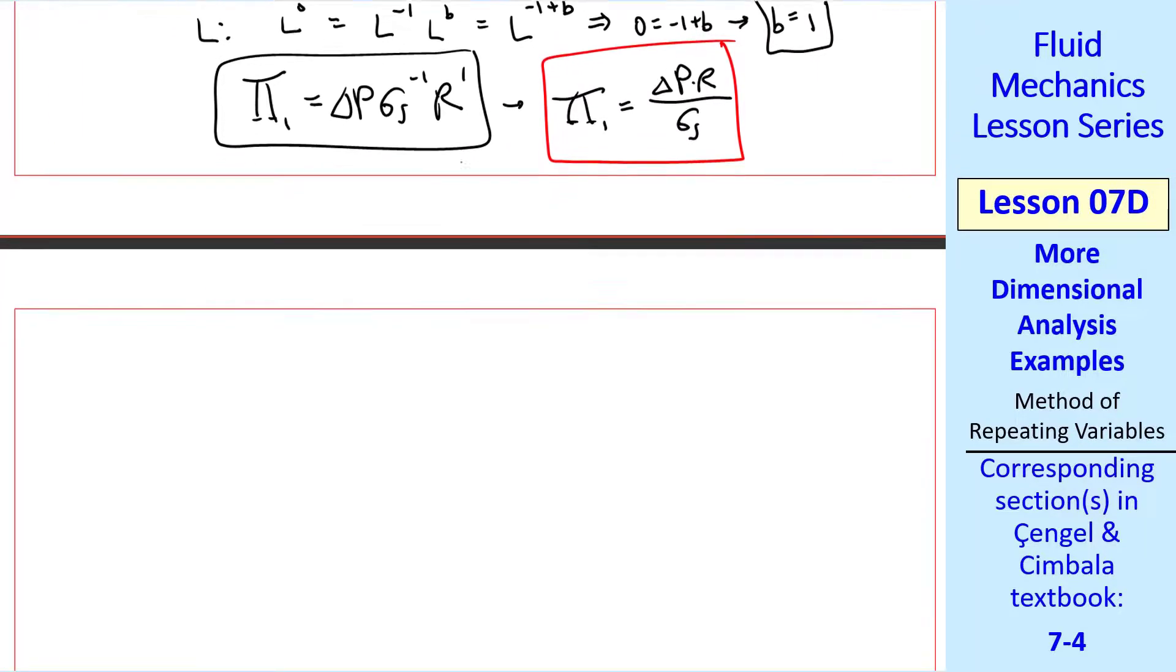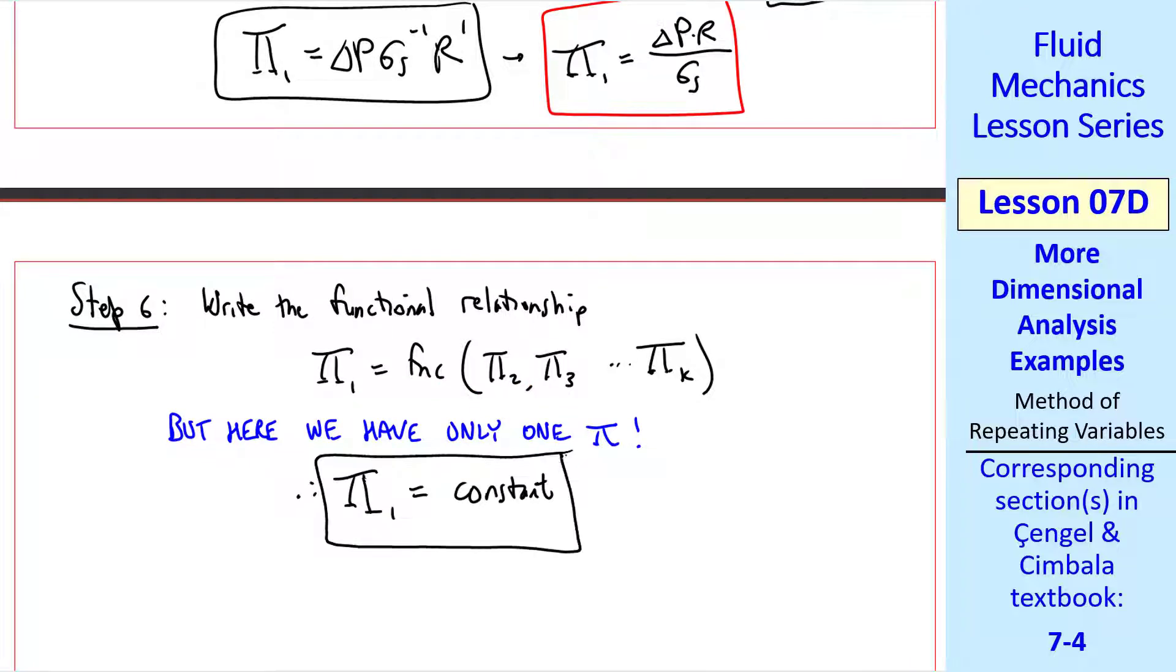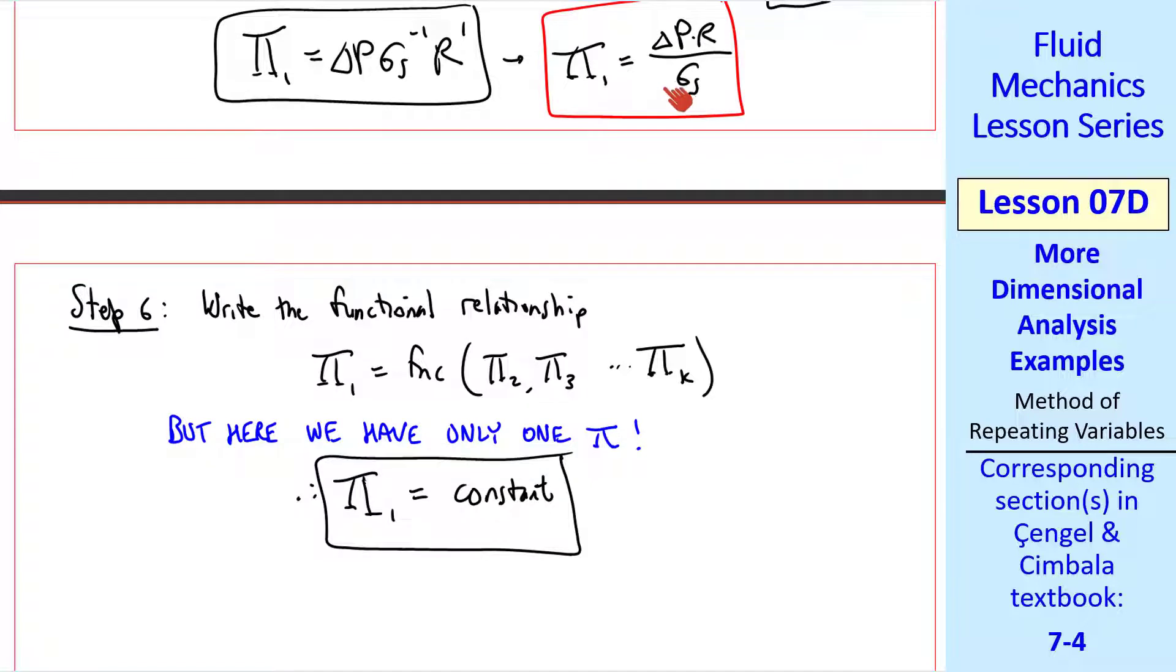Or pi 1 equal delta p times r over sigma s. This is our only pi, so we move on to step 6. Namely write the functional relationship, pi 1 is a function of the other pi's. But here we have only one pi. So what do we do? Well what this is basically saying is that pi 1 is a function of nothing. If something is a function of nothing, that means it doesn't change. So pi 1 is a constant. Plugging in our pi from up here, we have delta p times r over sigma s is a constant.